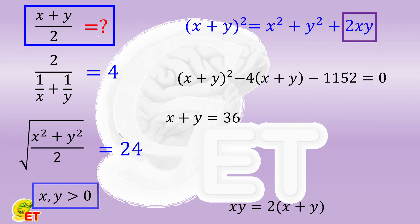We therefore obtain x plus y equals 36. So the arithmetic mean of these two numbers is equal to 18.